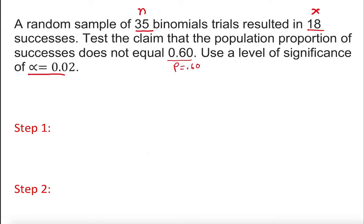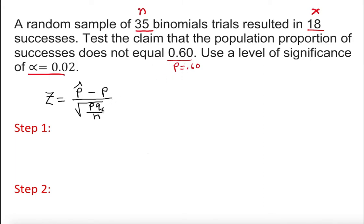For the one-proportion z-test, z equals phi-hat, which is the sample proportion, minus the population proportion, over the square root of phi times q over n. Here phi is the success rate, q is 1 minus phi, so if phi is 60 percent then q is 40 percent, and n is 35.